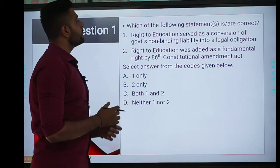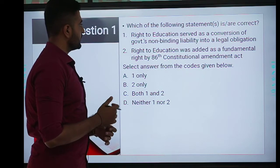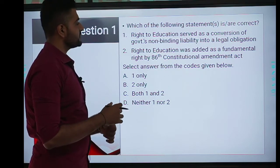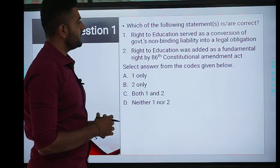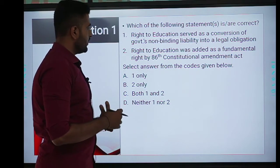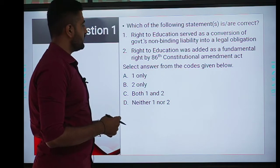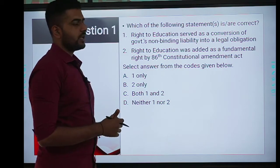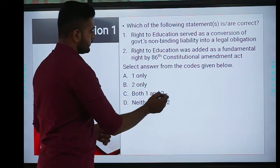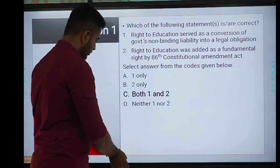First question: which of the following statements is or are correct? First, right to education served as a conversion of government's non-binding liability into a legal obligation. Second, right to education was added as a fundamental right by the 86th Constitutional Amendment Act. The correct answer is C, both 1 and 2.